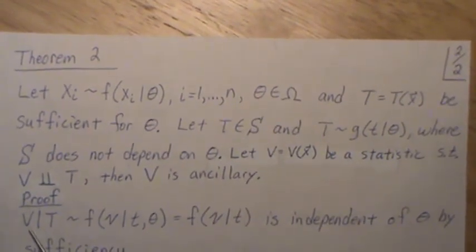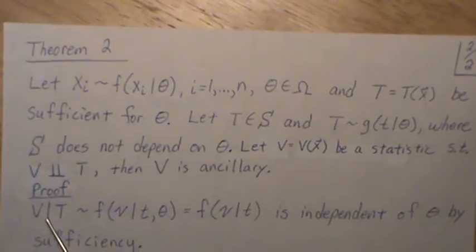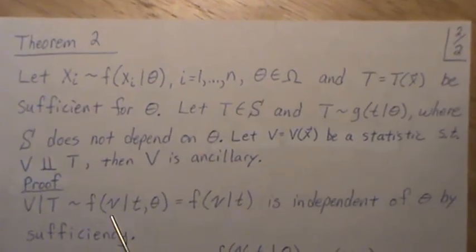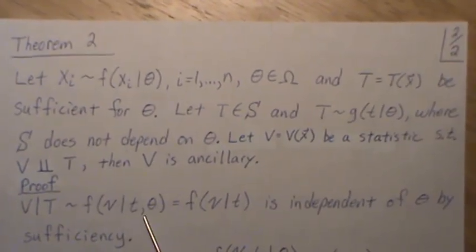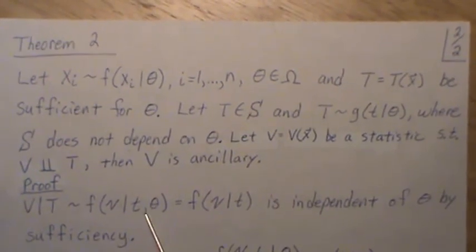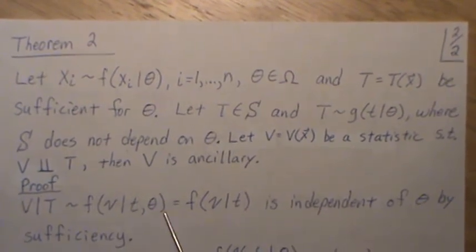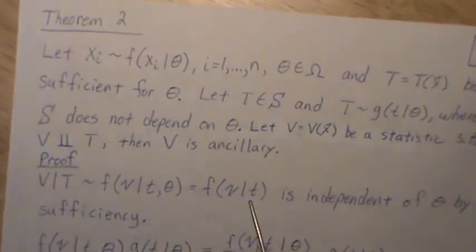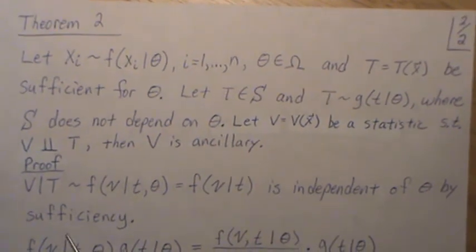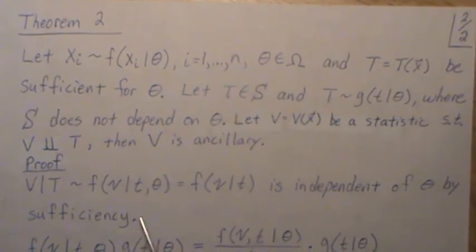So here's the proof. So let's look at the distribution of v given t. So that's f of v given t, and theta lives in it. But since t is sufficient, this is independent of theta. So really, we can think of it like this. Now it's independent of theta by sufficiency, t is sufficient.